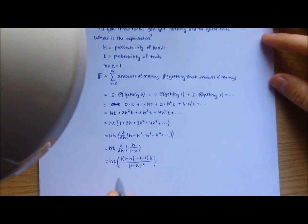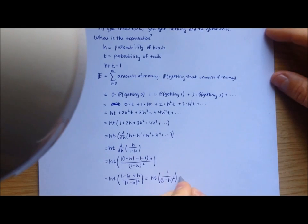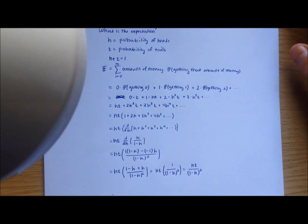Now we'd like to simplify this a bit. So we have ht times 1 minus h, minus minus 1 becomes plus 1, this becomes plus h, over 1 minus h squared. This just becomes ht times 1 over 1 minus h squared, which is just ht over 1 minus h squared. And that's the answer you're looking for.